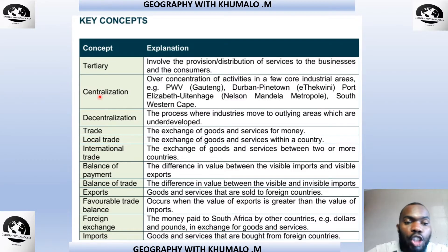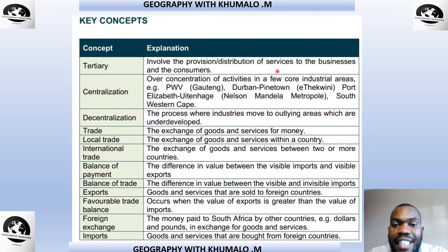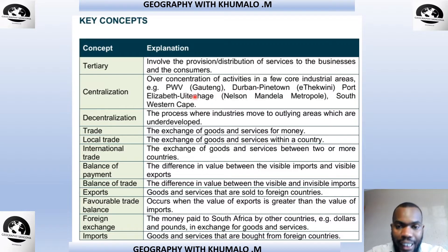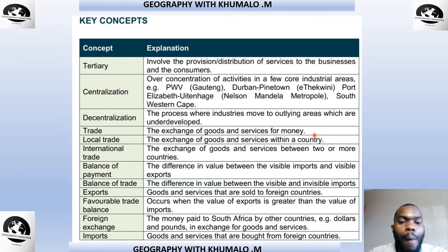We look at the concept of centralization and decentralization, which we covered under the strategies of industrial development. Centralization has to do with over-concentration of activities in a few core industrial areas — the PWV, Port Elizabeth, Uitenhage, Devon Pinetown, and the South Western Cape. Decentralization has to do with the process where industries move to outlying areas which are underdeveloped. Trade is the exchange of goods and services for money.